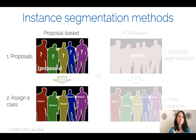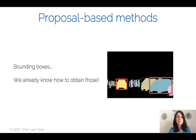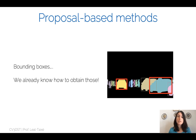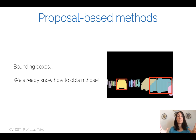We'll focus this lecture on proposal-based methods because they have shown much better performance. Proposal-based methods leverage what we already know — how to obtain bounding boxes and do object detection. If you already know how to separate different instances of the same semantic class with object detection, you can use that as input and then find the segmentation mask within the bounding box. It's much easier to find the appropriate segmentation mask if you already have a bounding box constraining where the instance pixels can be found.